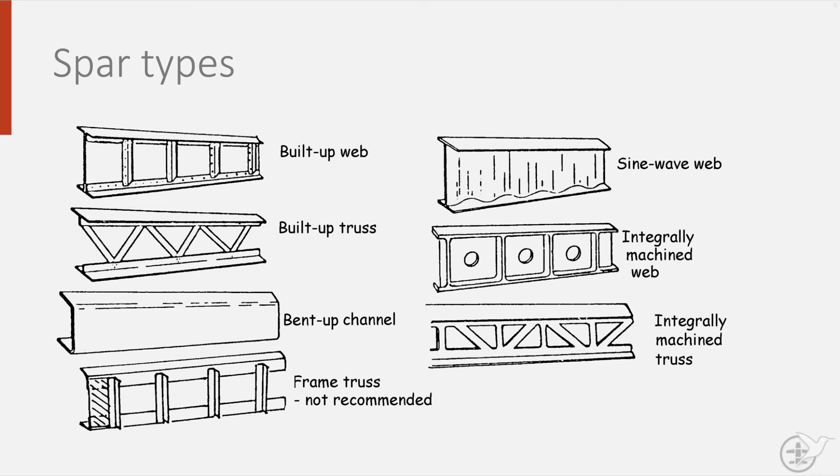As you can see here, choosing the right design for the wing of your aircraft or spacecraft really is a balancing act of material choices, manufacturing options and structural design. Each change in one of these impacts the others.